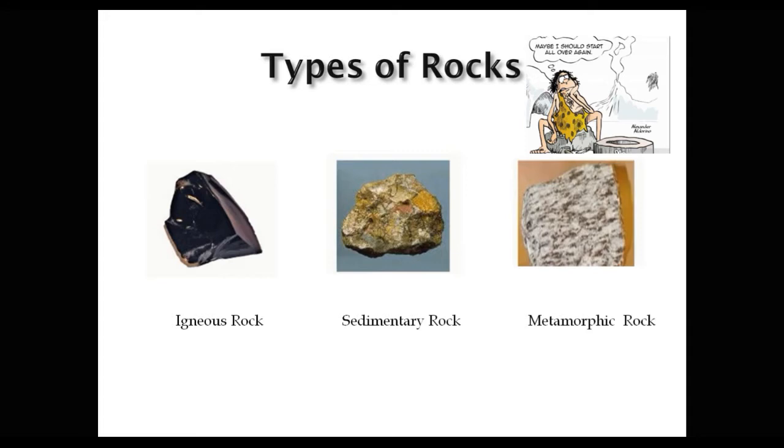As you can see here, there are three types of rocks: igneous rock, sedimentary rock, and metamorphic rock. Igneous rocks are generally formed due to volcanic activities, and sedimentary rock is formed due to the process of sedimentation.